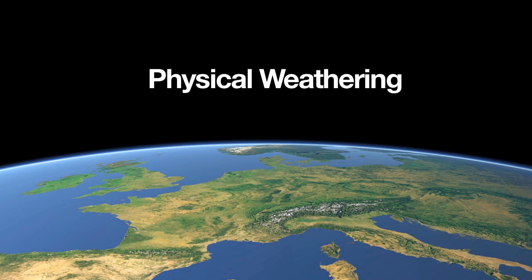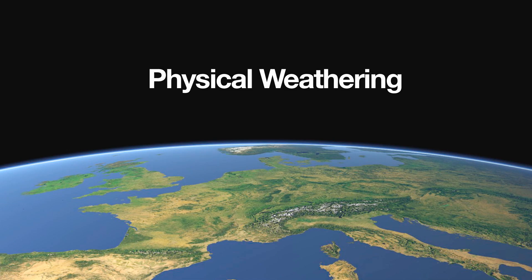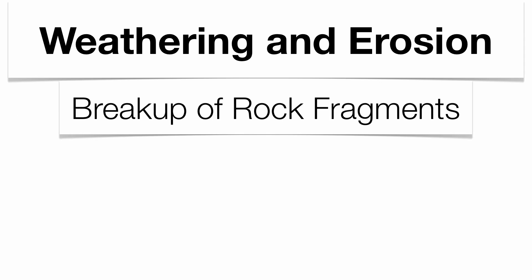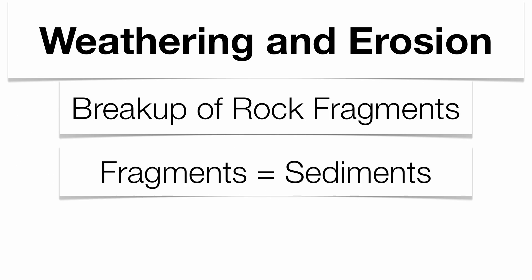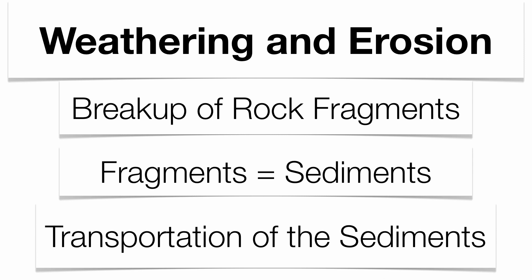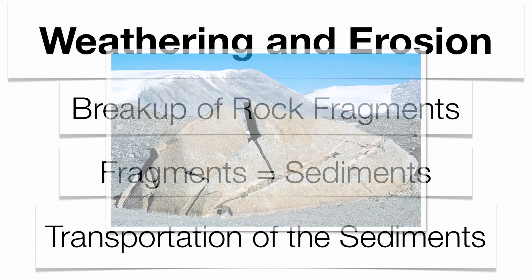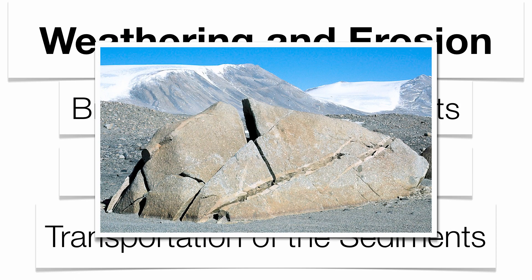In order to talk about weathering, you need to understand the difference between erosion and weathering. Weathering is the breakup of rock into smaller pieces called fragments, sometimes called sediments. Once those sediments exist, they're going to be transported to another location through the process of erosion. In this podcast, we're going to focus on the actual breakup of rock — the physical change within their sizes and shapes.